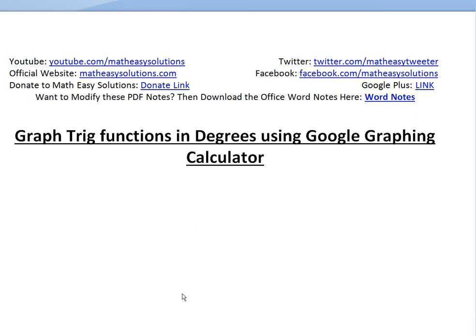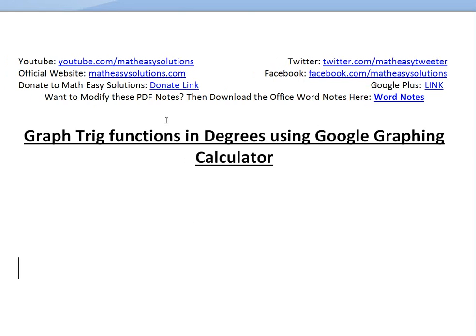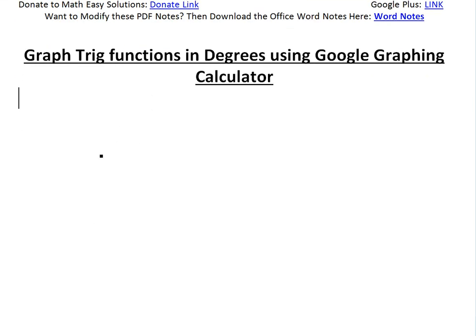Hi, it's time for another math easy solution. I'm going to discuss how to use the Google graphing calculator in degrees mode when graphing trig functions. Right now in Google graphing calculator, if you were to graph a function, let's say sine of x, it's basically going to be in radians only.